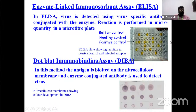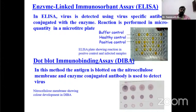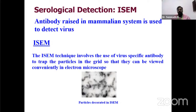Dot immunobinding assay (DIBA) is a method where antigen is blotted on a nitrocellulose membrane and enzyme-conjugated antibody is used to detect the virus. Spots showing a reaction indicate virus presence; no reaction indicates a negative sample. Immunosorbent electron microscopy (ISEM) is a serological technique using specific antibody for coating of virus particles, observed under electron microscope.